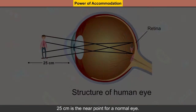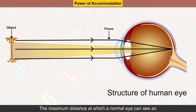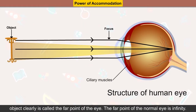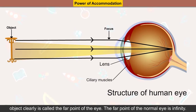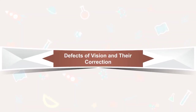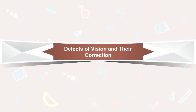The least distance at which a normal eye can see an object clearly is called the near point of the eye — 25 cm for a normal eye. The maximum distance at which a normal eye can see an object clearly is called the far point of the eye, which is infinity for a normal eye.